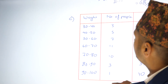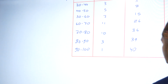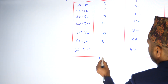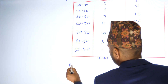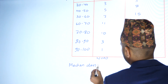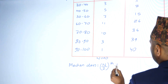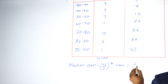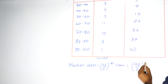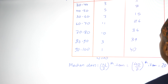Meaning N is equal to 40, which is equal to the total. So N/2 is equal to 40 divided by 2, giving us the 20th item.